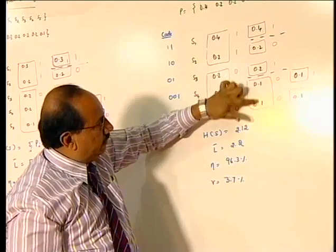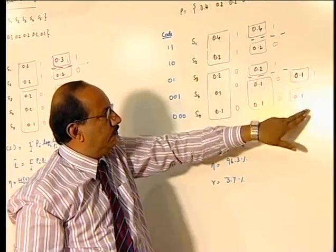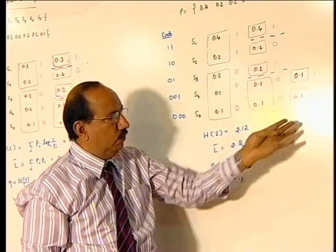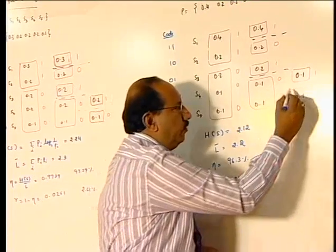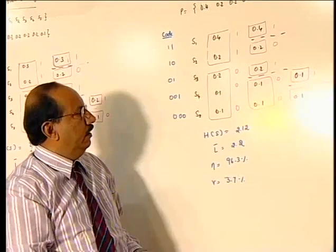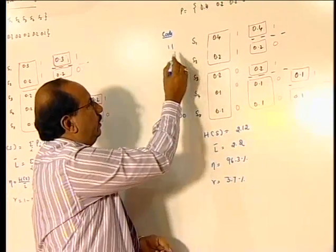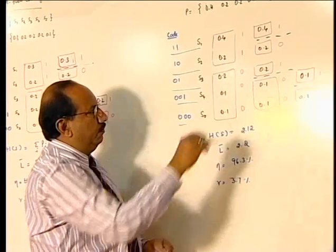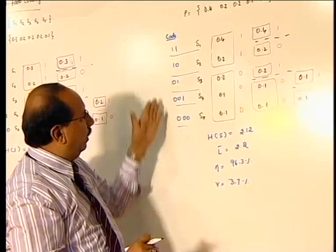Now the last step is this one I have to split into two halves with almost equal probability. Anyhow, these are 0.2, 0.1 only, that is why I am getting. I will make into two halves, assigning 1 for the upper one and 0 for the lower one. If I do like this, then the codeword for symbol 1, symbol 2, 3, 4, and 5, proceeding in this direction, I will get these codewords.